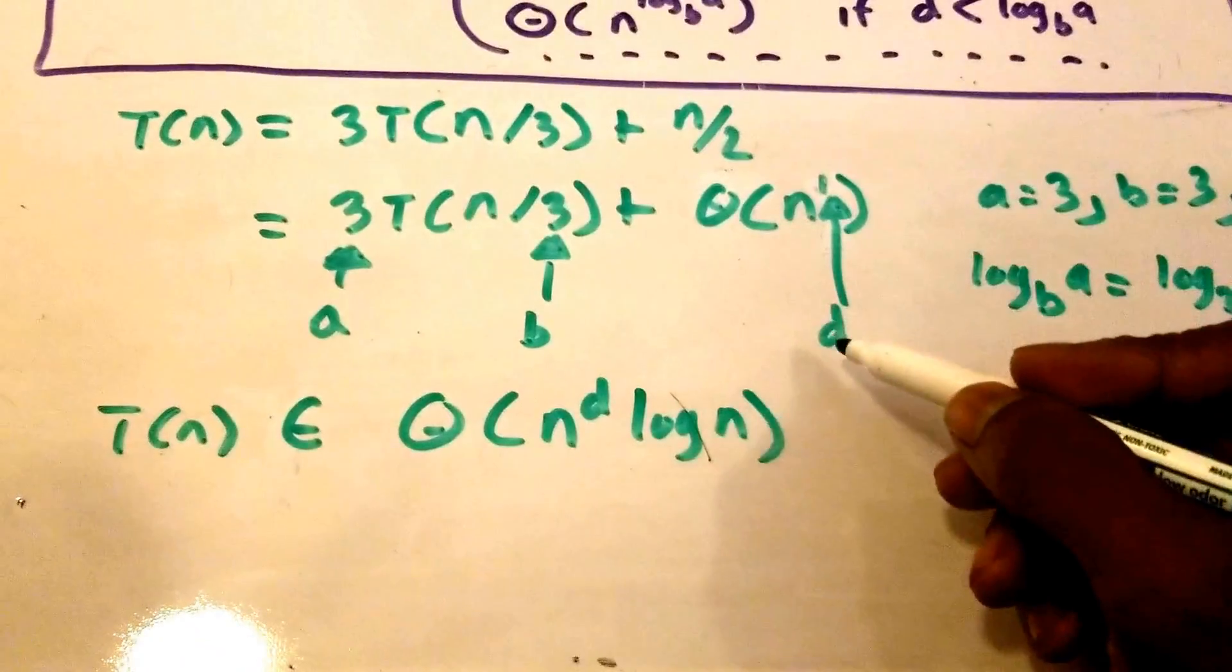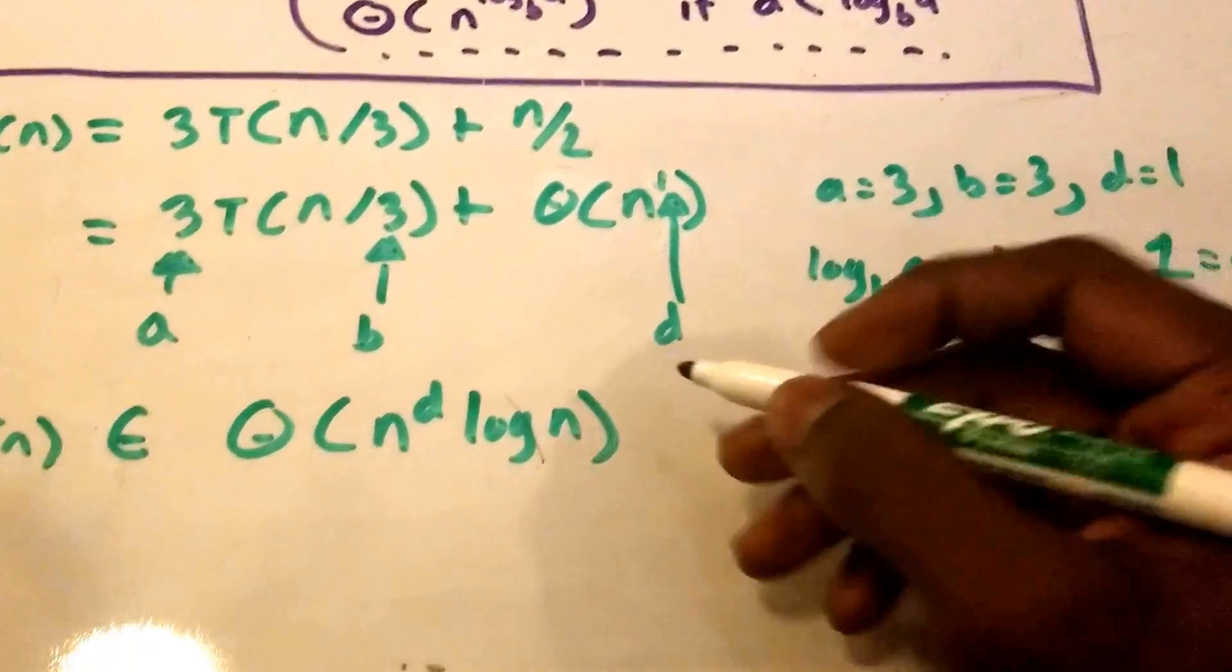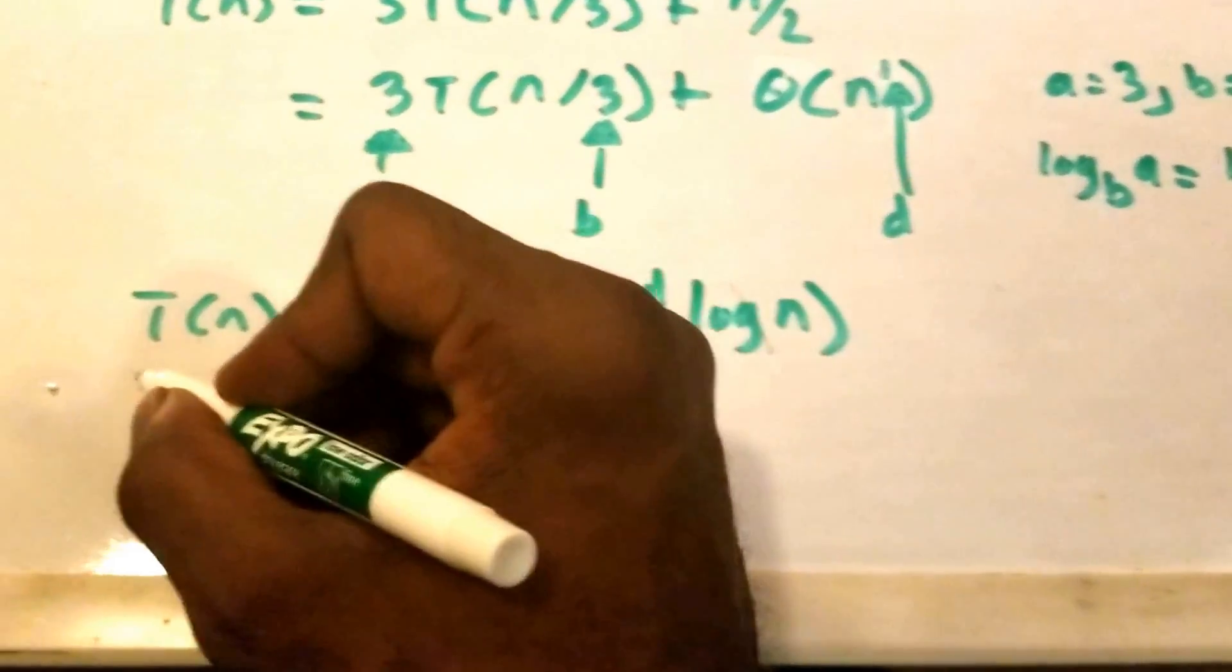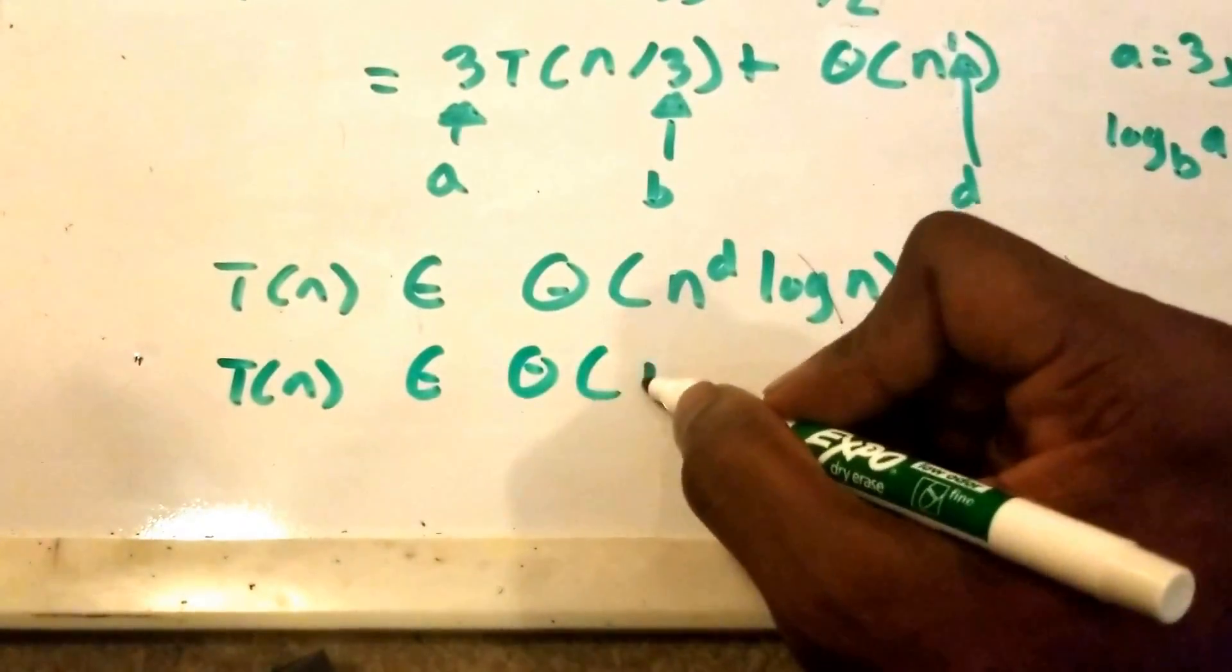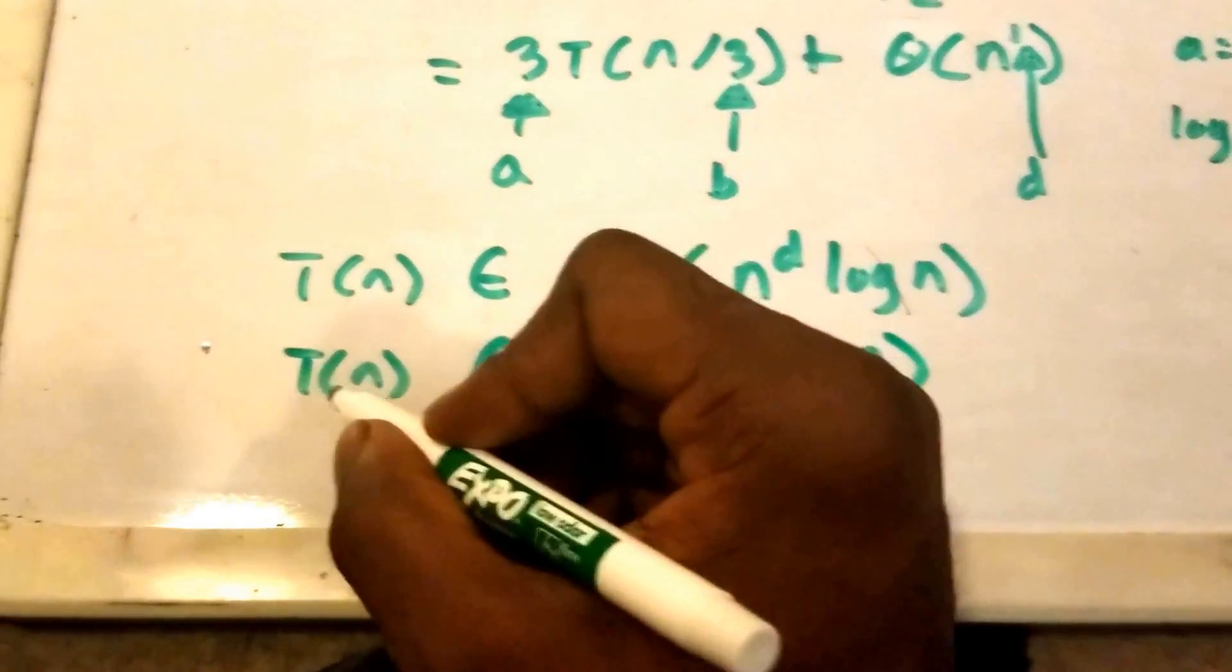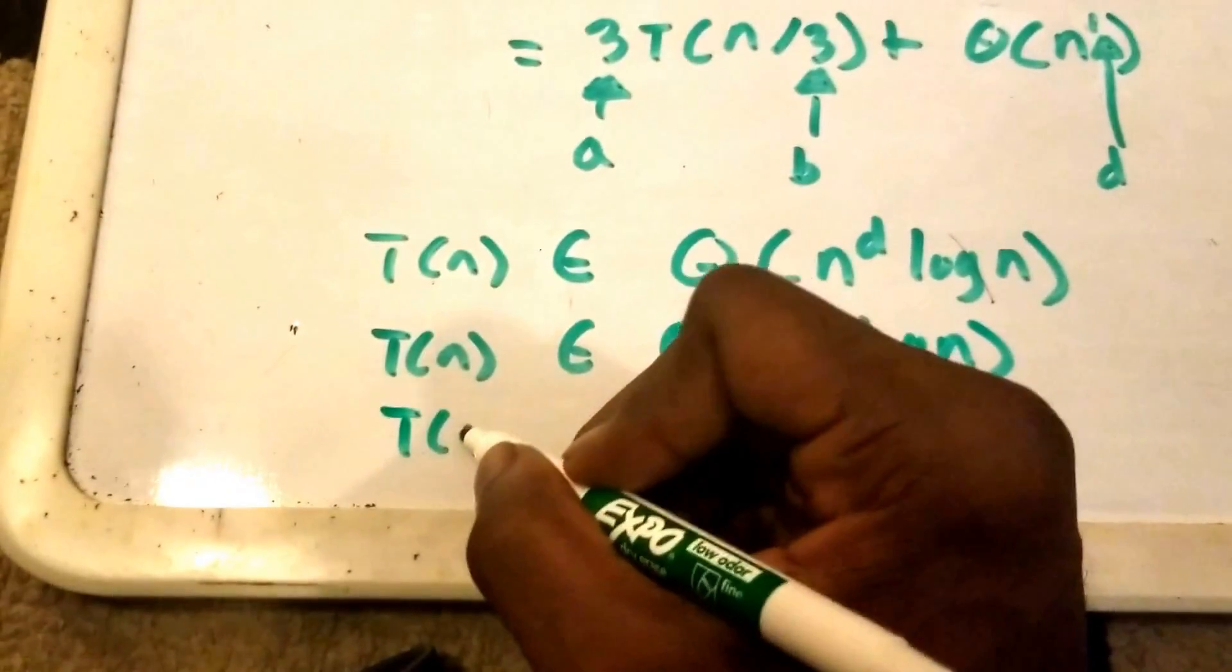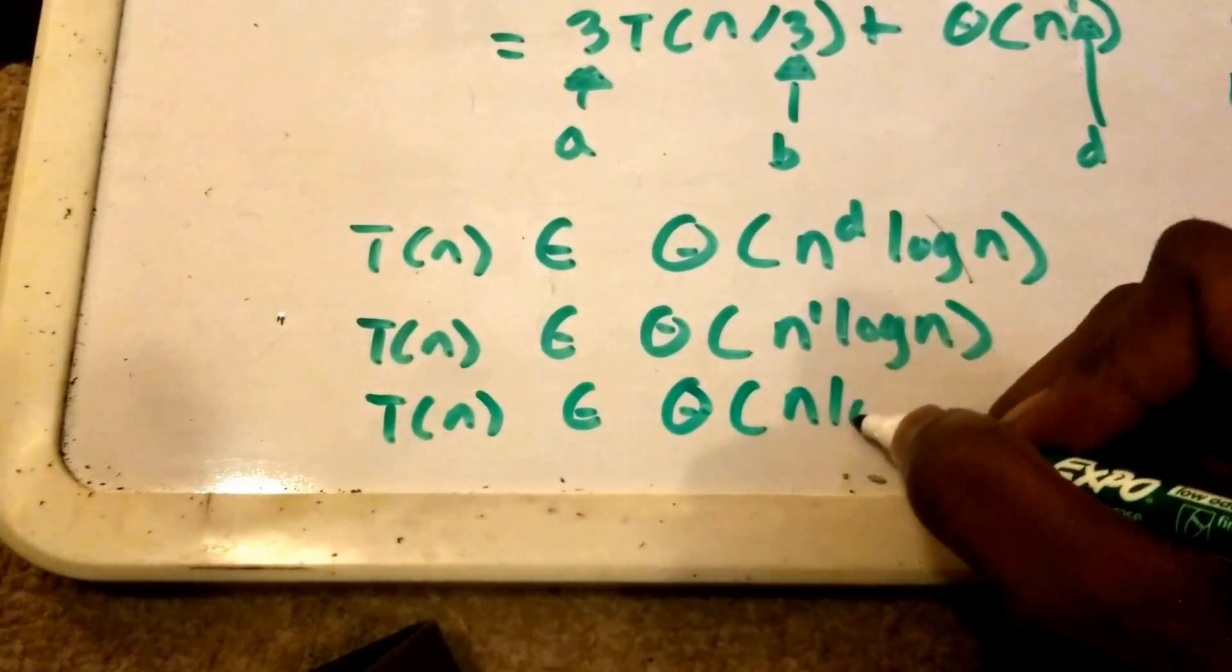And what did we say d was? Well, we said d is equal to 1. So that means that T(n) belongs to theta of n to the power of 1 times log n. And of course, that means that T(n) belongs to theta of n log n.